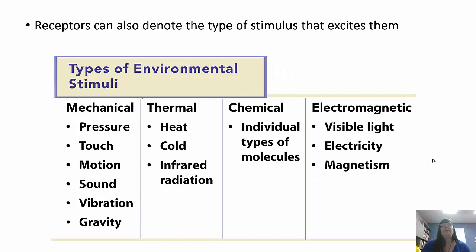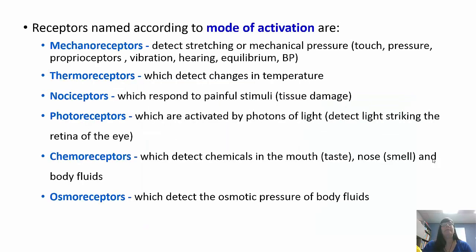There is a chart on receptors and the types of stimuli that activate them. Mechanical stimuli include pressure, touch, and sound. Thermal stimuli are hot versus cold. Chemical stimuli involve individual types of molecules. Electromagnetic stimuli include electricity, magnetism, and visible light. By mode of activation: mechanoreceptors respond to stretch or mechanical pressure, thermoreceptors to temperature, nociceptors to pain and tissue damage, photoreceptors to light, chemoreceptors to chemicals, and osmoreceptors detect osmotic pressure.